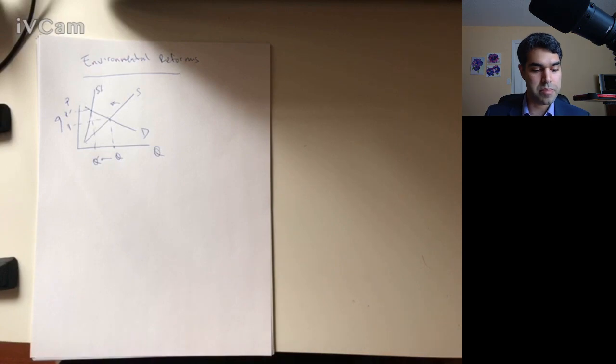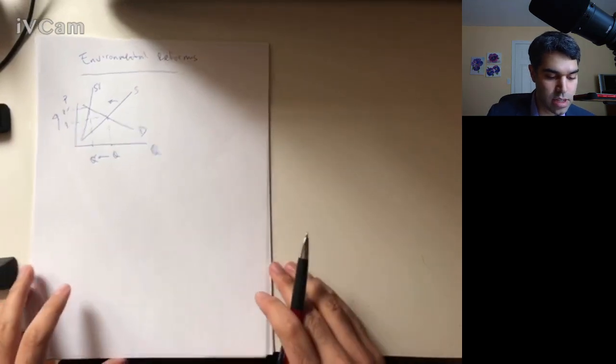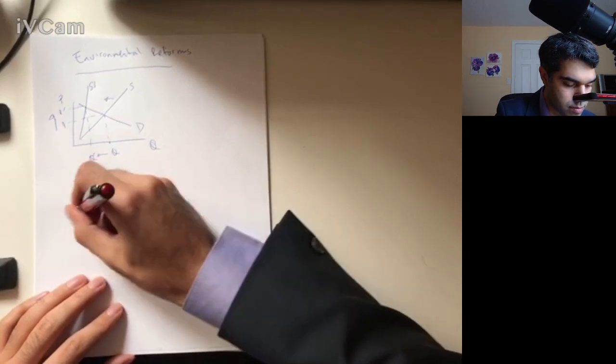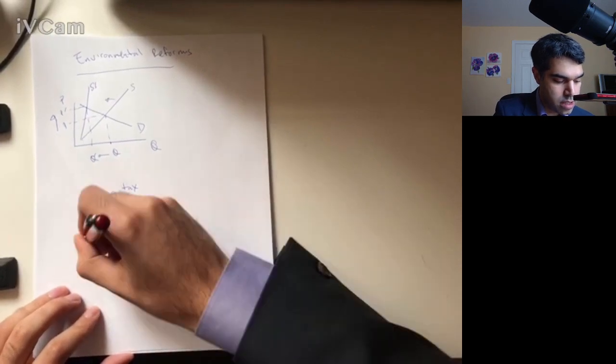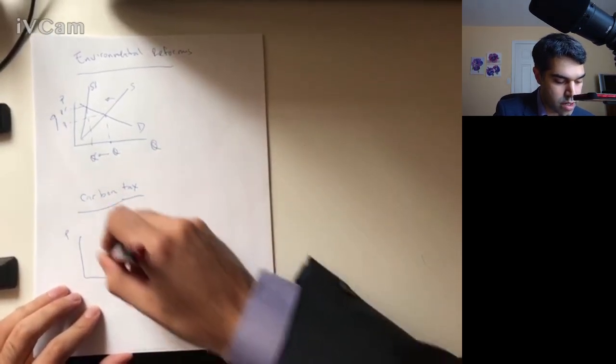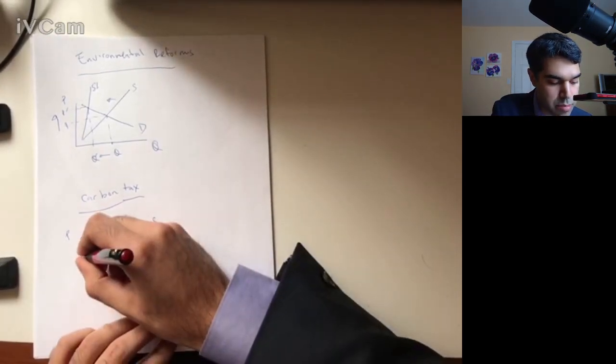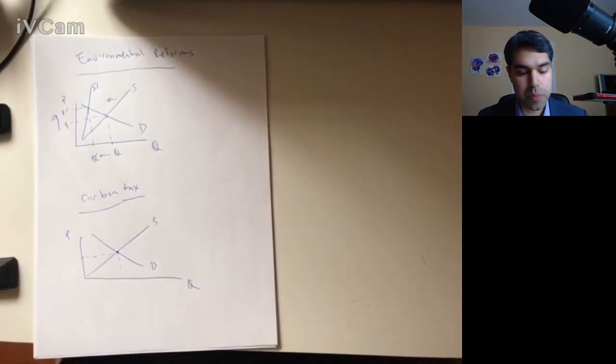In another way, environmental problems are asked to be reformed right now is through something called the carbon tax. And you guys had a debate on the carbon tax and the carbon tax is they're saying, so you've got price, you've got quantity, you've got a supply and demand. The carbon tax is the belief that the equilibrium market price is too low. It's too low because of externalities, because of other market failures.